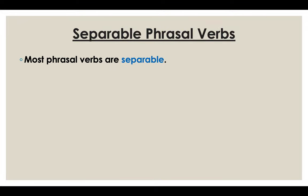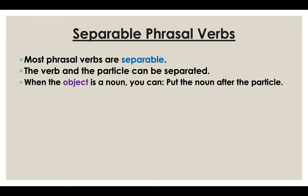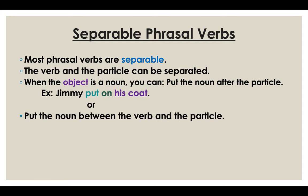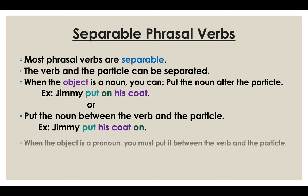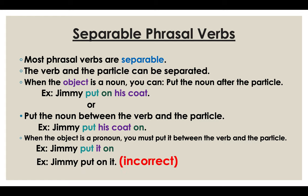Separable phrasal verbs — most phrasal verbs are separable. The verb and the particle can be separated. When the object is a noun, you can put the noun after the particle — Jimmy put on his coat — or put the noun between the verb and the particle — Jimmy put his coat on. When the object is a pronoun, you must put it between the verb and the particle — Jimmy put it on. You cannot say Jimmy put on it — that's incorrect.